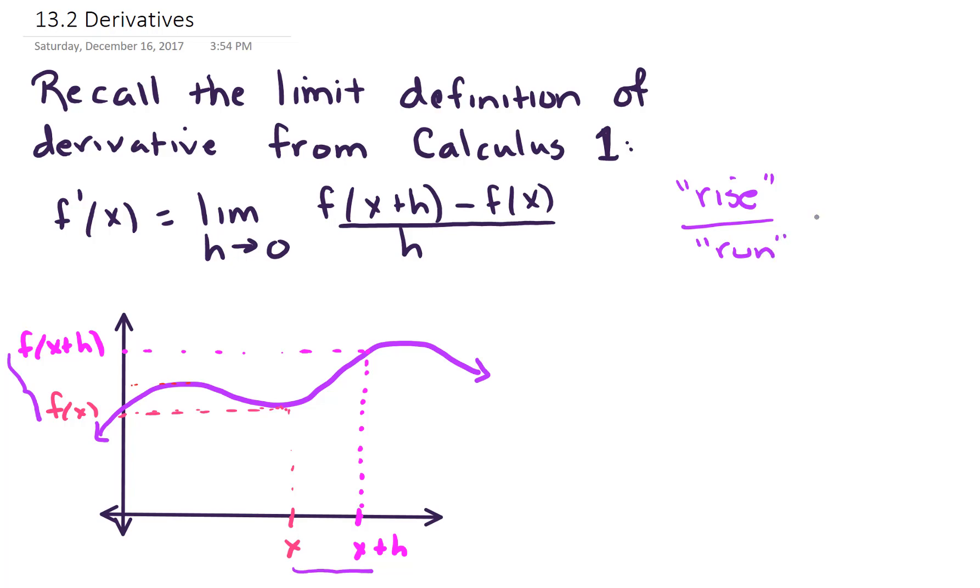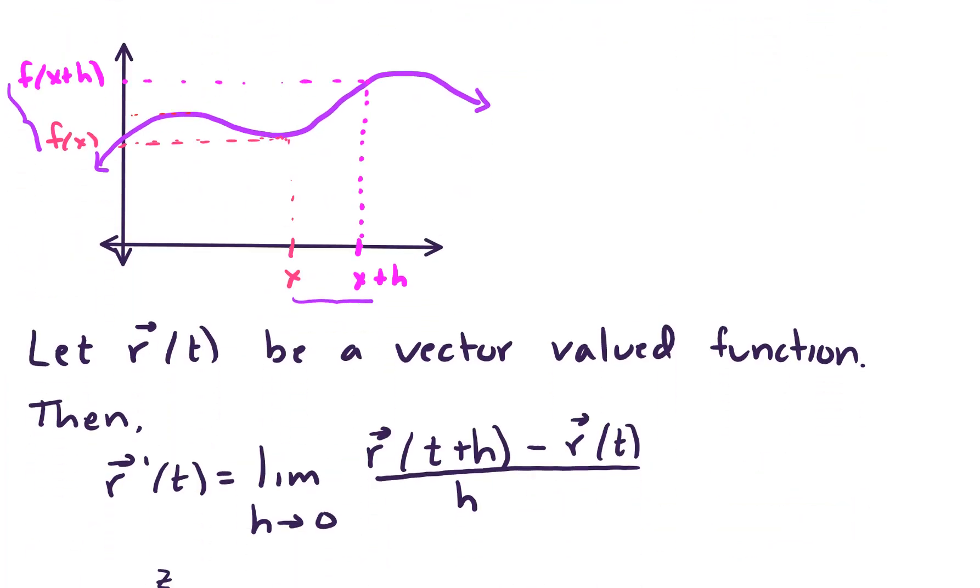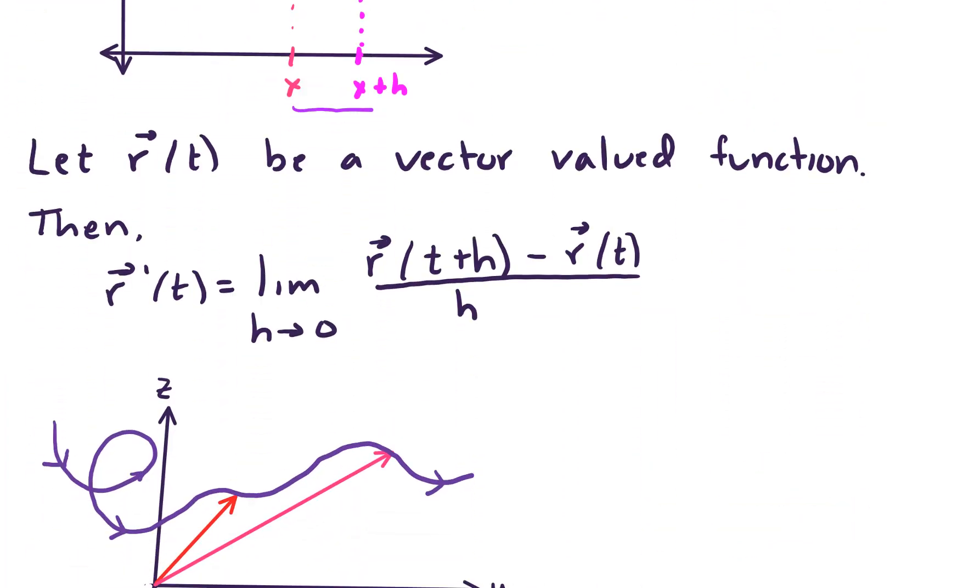And that is roughly equivalent to the slope, which we often call m. Letting h go to 0, that gives us the slope of the tangent line. We're going to do a similar idea with our vector-valued functions, so let's take a look at the analogy here.